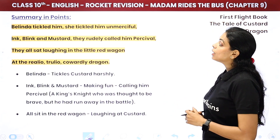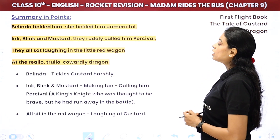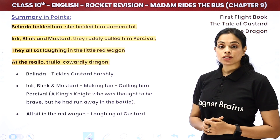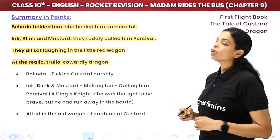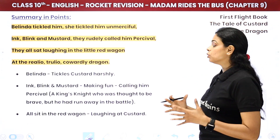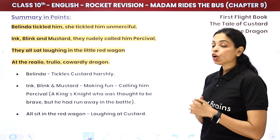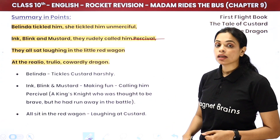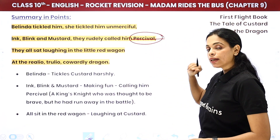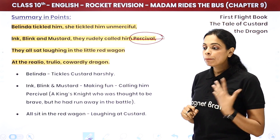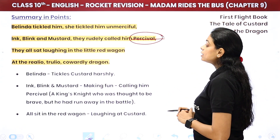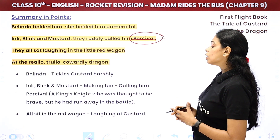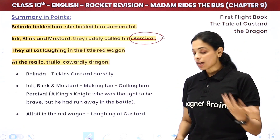Belinda tickled him — she tickled him unmerciful, meaning very harshly. Ink, Blink, and Mustard rudely called him Percival. Percival was a king's knight thought to be brave, but he ran away in battle. They all sat laughing in the little red wagon at the really, truly cowardly dragon — everyone was mocking him.